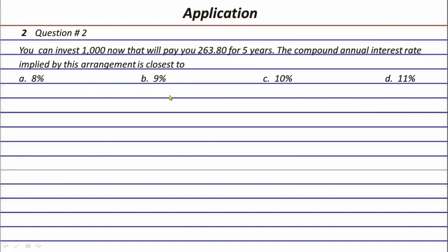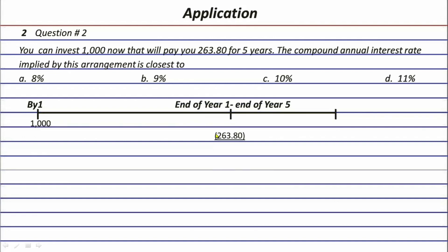For step two, let's interpret and understand the problem. It says you can invest one thousand now — that's the present value. That investment will pay you 263.80 for five years. Since 263.80 times five is more than the one thousand investment, it means the investment has grown. The question is: what is the growth rate or interest rate? So the interest rate is unknown.